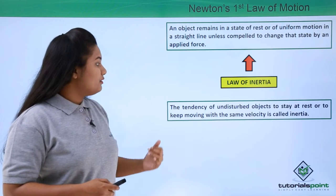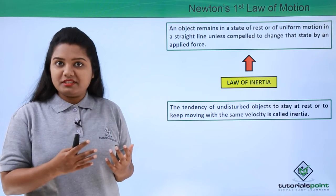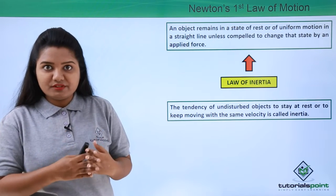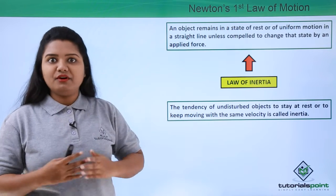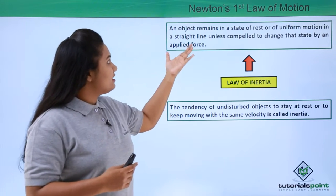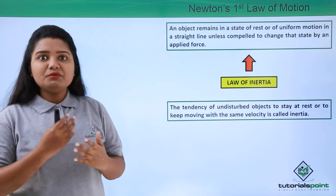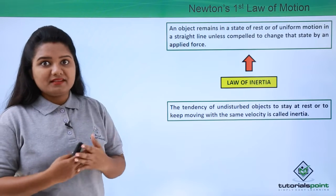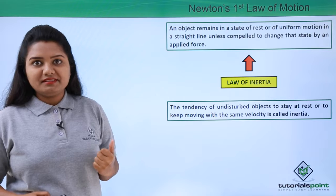Inertia is the tendency of undisturbed objects — objects on which there is no externally applied force — to stay in the same state of rest or uniform motion. In order to understand this law, we need to first understand its three aspects. So let us look at all those three aspects.